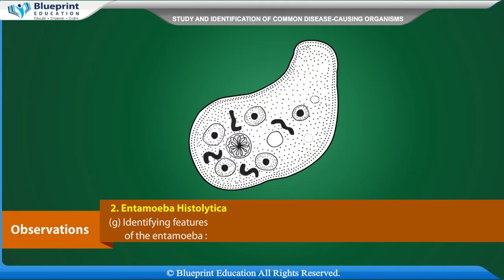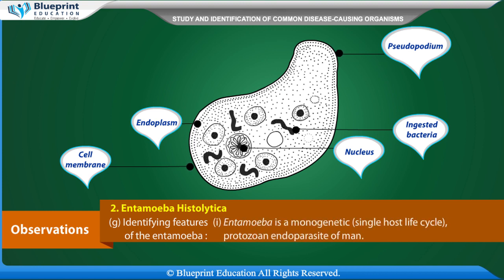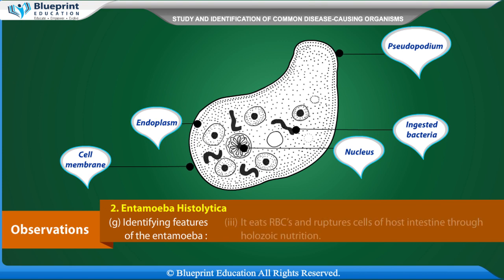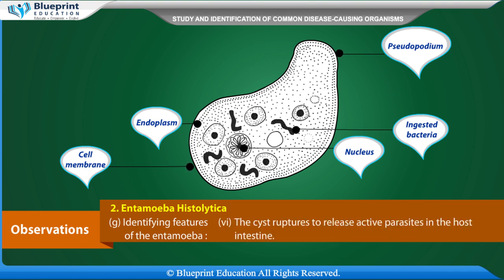The parasite may perforate the intestinal wall causing ulcers. Cysts appear in the fecal matter of the infected person. The parasite may enter the liver, lungs or spleen. Identifying features of Entamoeba: Entamoeba is a monogenetic, single-host life cycle protozoan endoparasite of man. It is single-celled and microscopic. It eats RBCs and ruptured cells of the host intestine through holozoic nutrition. It has only one pseudopodium, a single nucleus, but a number of food vacuoles. It reproduces asexually and forms cysts during unfavorable conditions. The cyst ruptures to release active parasites in the host intestine.